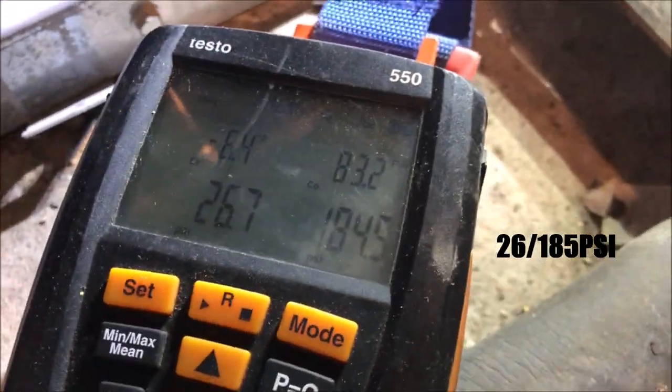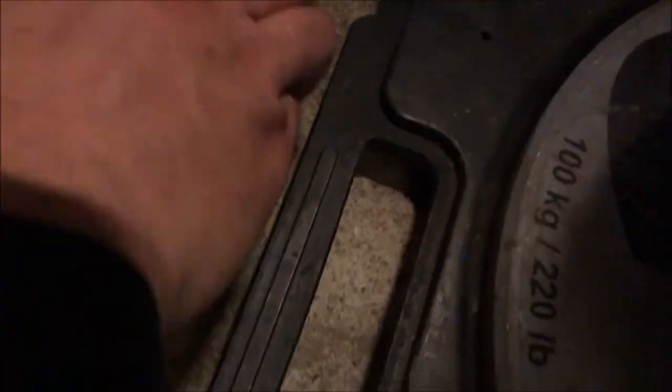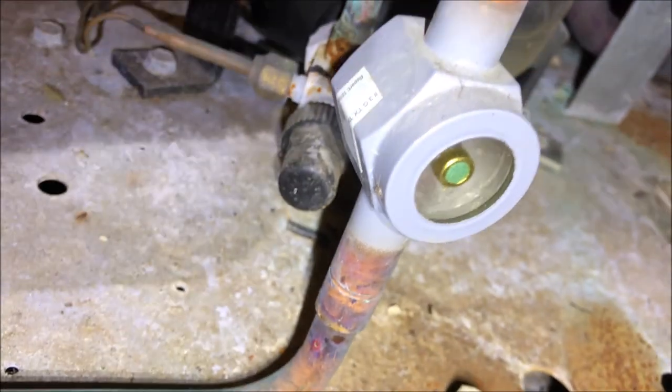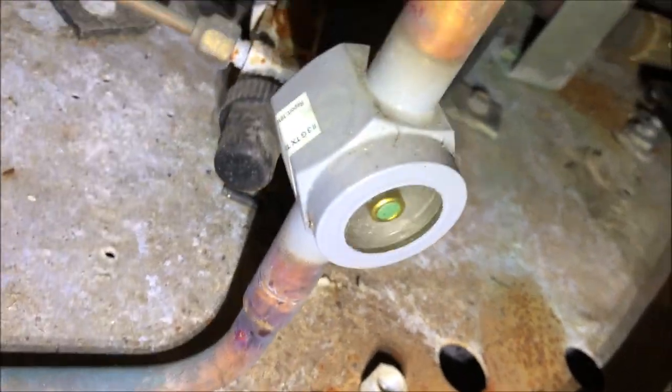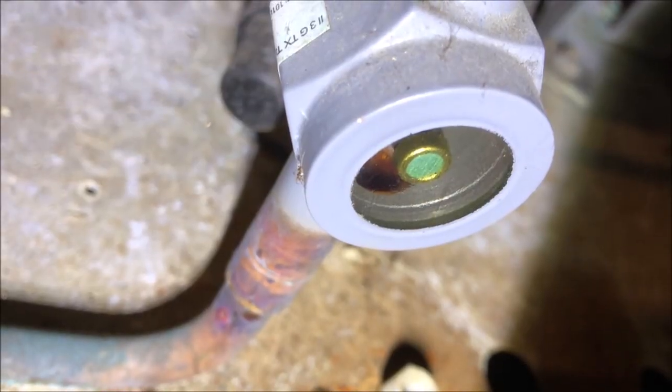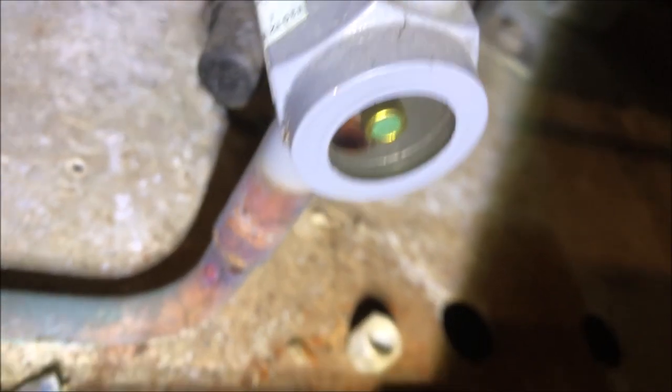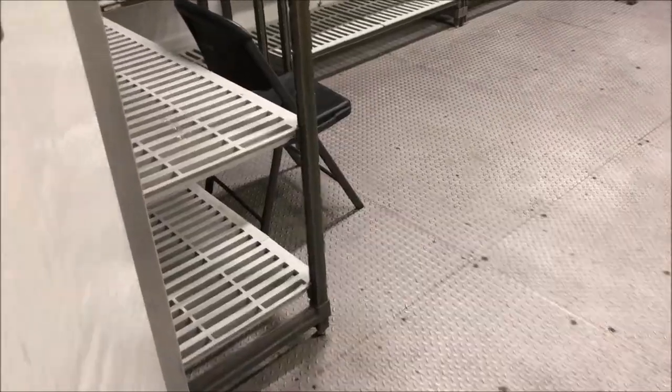So our pressures are 26 and 185. We've got about four and a half pounds in there. The sight glass is still flashing, so let's continue to charge it. We've got the sight glass full. All right, the sight glass is finally full. The pressures are up to 44 and 182, and you can see we're at temperature here, 35.